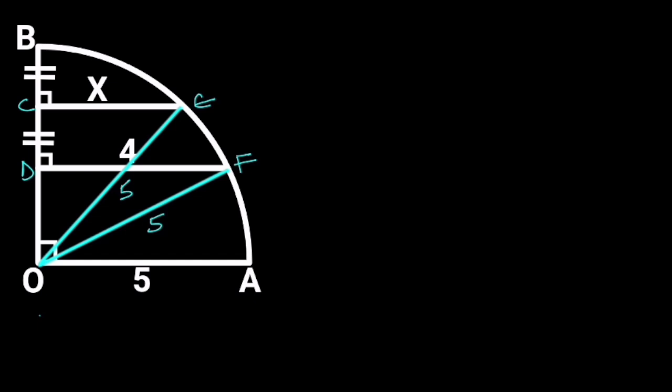Next, let's consider triangle ODF. Triangle ODF is a right triangle. From Pythagoras theorem, OF squared is equal to OD squared plus DF squared. OF is equal to 5, and DF is equal to 4.